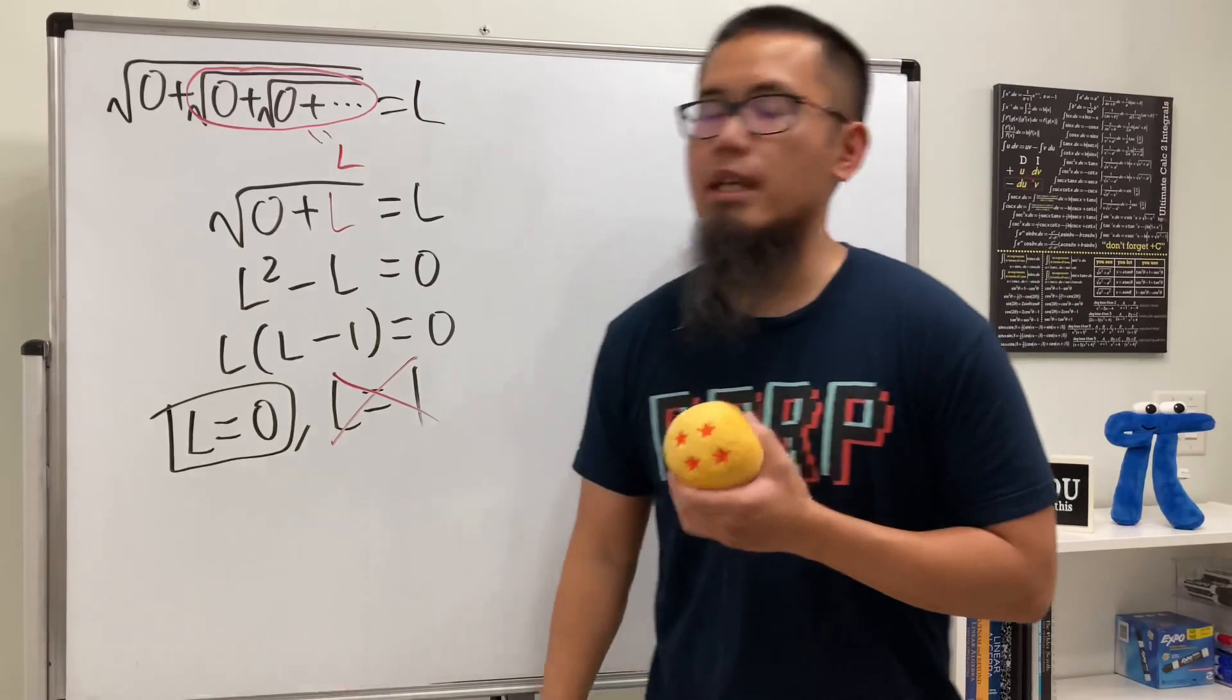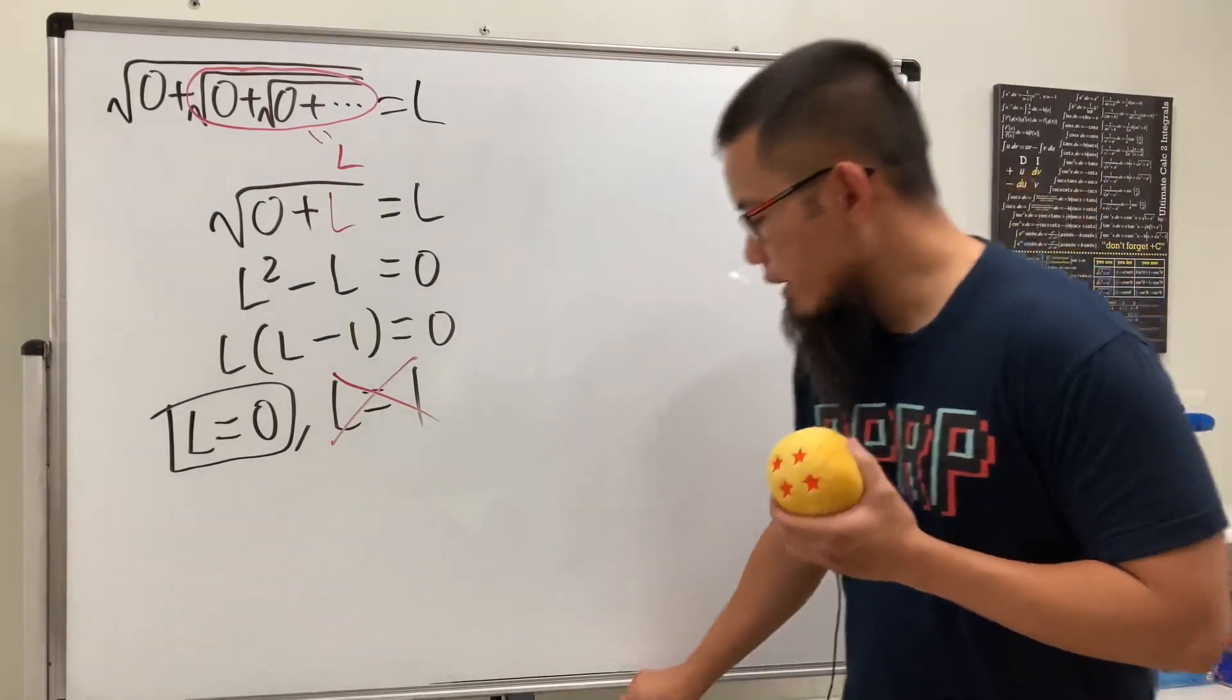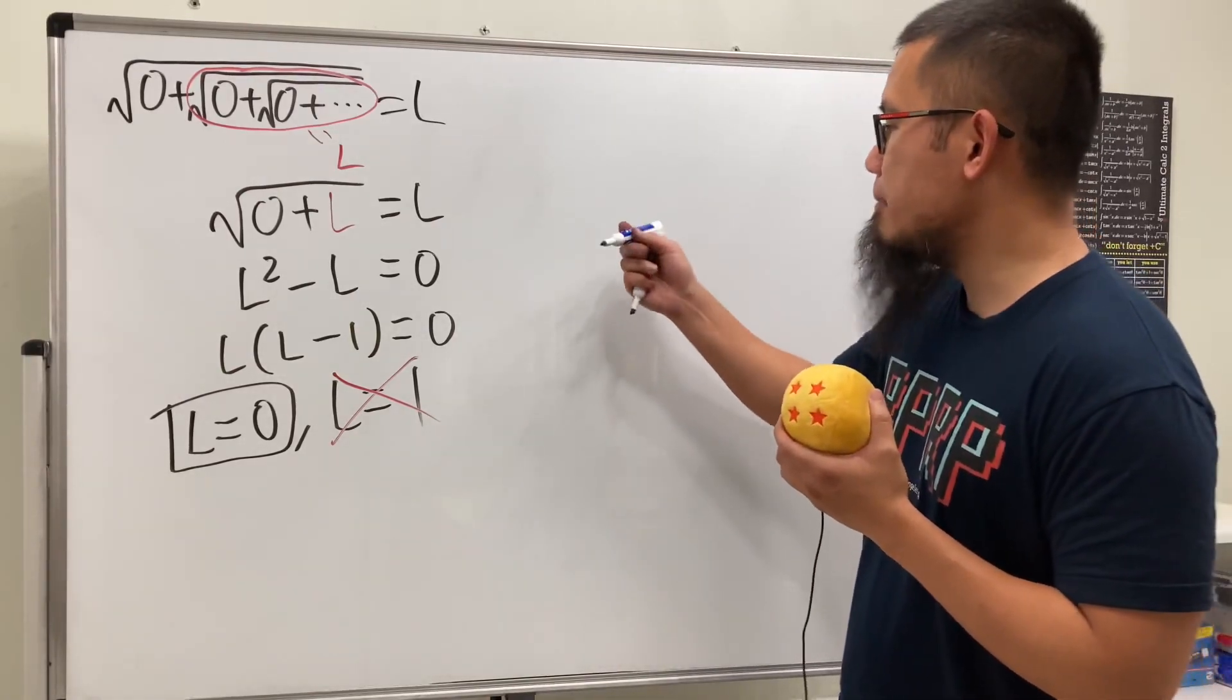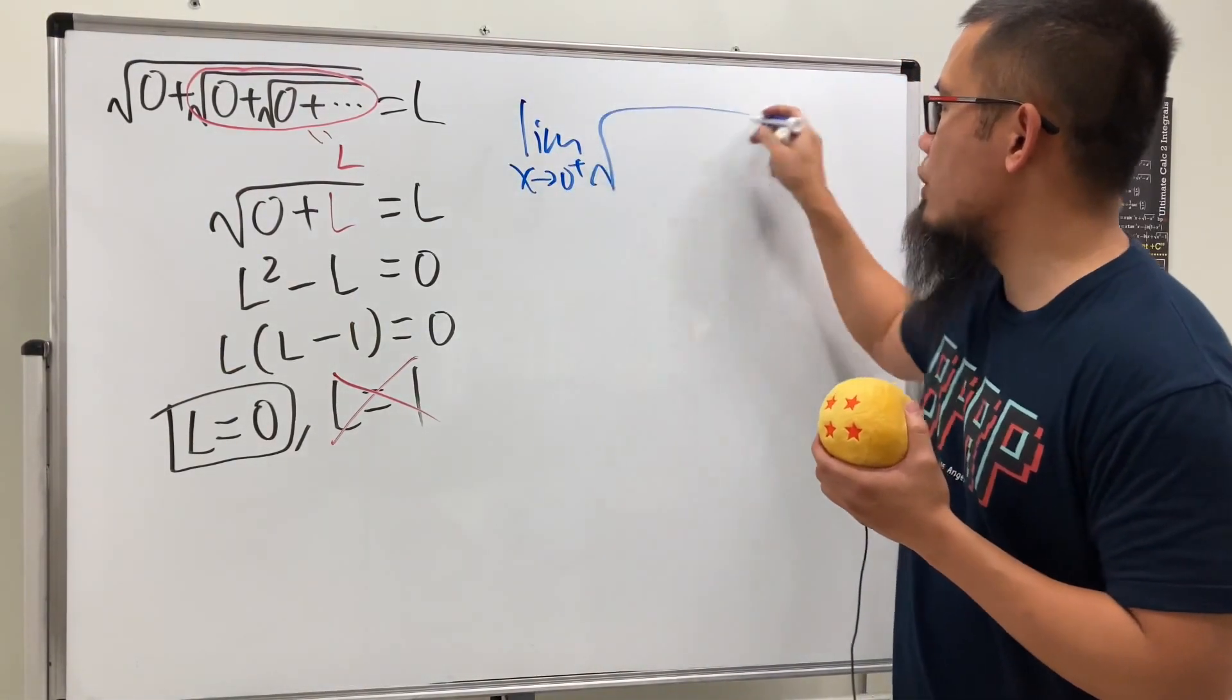Right? Well, the deal is that if you're talking about the limit, the limit as x approaching zero plus, and then square root of x plus the square root of x plus the square root of x plus, this right here will give you one.